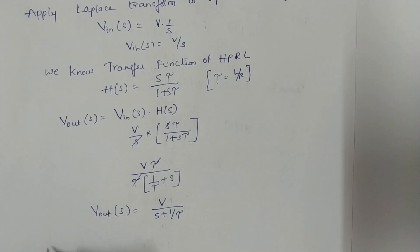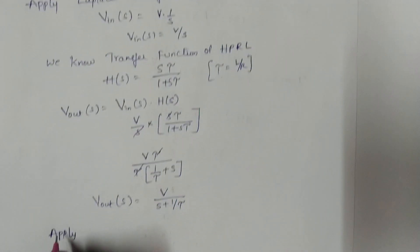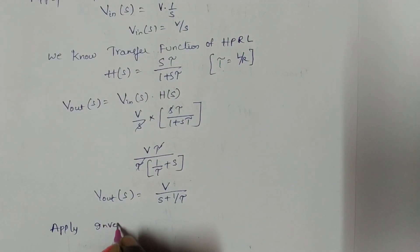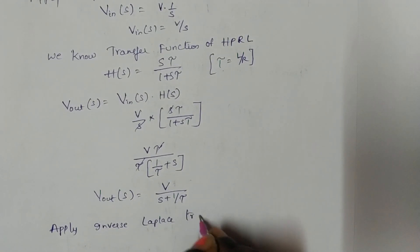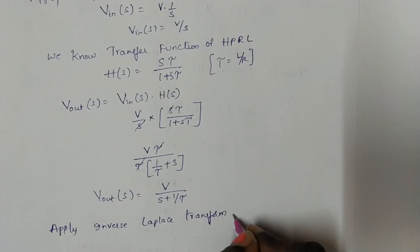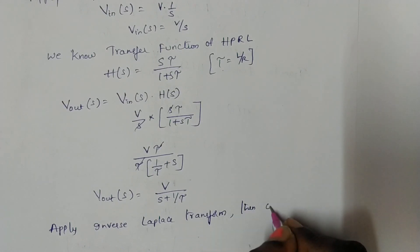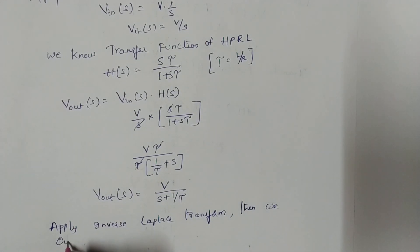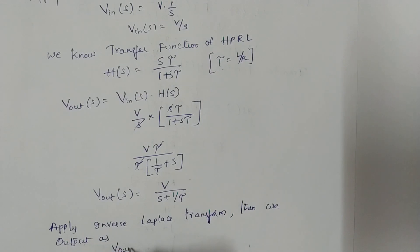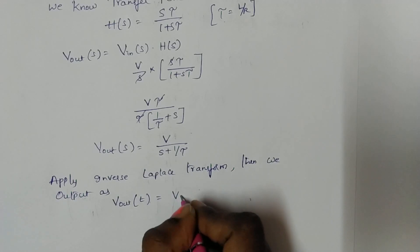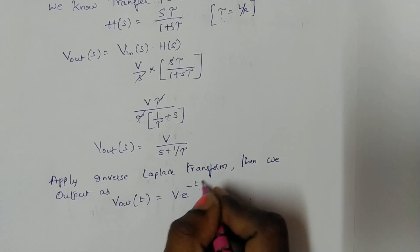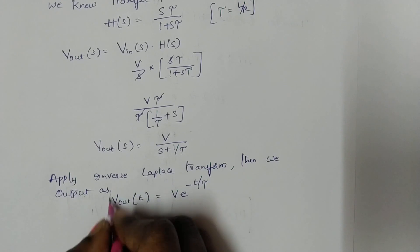Applying the inverse Laplace transform, we get the output equation: V_out(t) = V · e^(−t/τ). This is the output equation for a step input applied to a high-pass RL network.